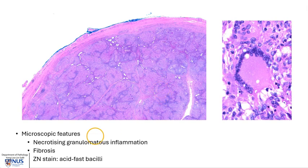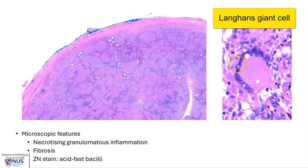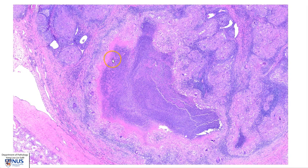Microscopically, the key finding is that of necrotizing granulomatous inflammation, sometimes with fibrosis, and the Ziehl-Neelsen stain would reveal the presence of acid-fast bacilli. PCR can also be performed on the epididymal or testicular tissue to reveal the presence of mycobacterial organisms. Here we can see the epididymis — a few of the residual ducts are visible, but the parenchyma is largely replaced by very well-formed epithelioid granulomas. Here is a high magnification view showing a geographic area of necrosis surrounded by granulomatous inflammation.